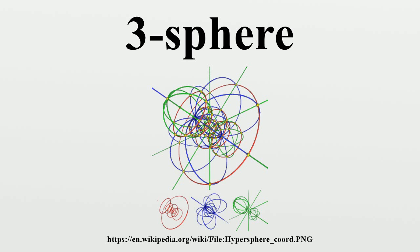It is often convenient to regard R4 as the space with two complex dimensions or the quaternions. The unit three-sphere is then given by all quaternions of norm 1, identifying the three-sphere with the versors in the quaternion division ring.